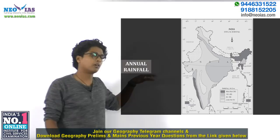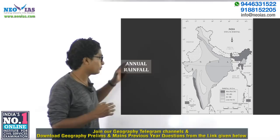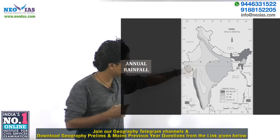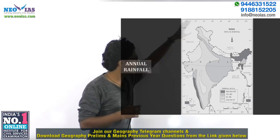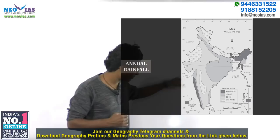The annual rainfall of India depends on both the southwest monsoon and the northeastern monsoon, though we get more rainfall from the southwest monsoon. The northeastern monsoon provides rainfall for the northeastern states as well as the eastern coast, but provides very little rainfall for the plains. The southwest monsoon provides more rainfall for the western coast, the Western Ghats, the northeastern region, and the plains.